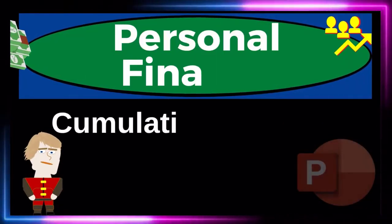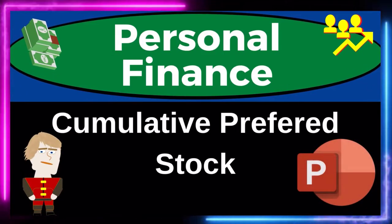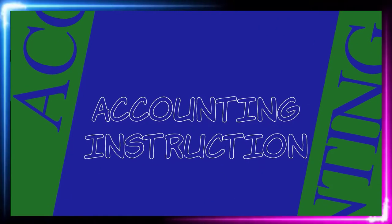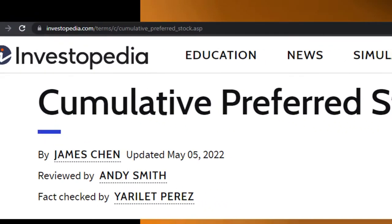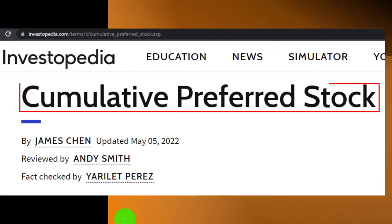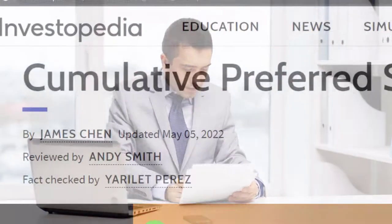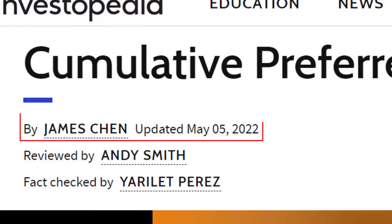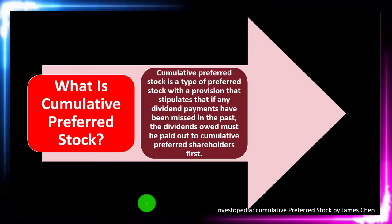Personal finance PowerPoint presentation: cumulative preferred stock. Prepare to get financially fit by practicing personal finance. Most of this information comes from Investopedia, which you can find online — take a look at the references and resources to continue your research. This is by James Chen, updated May 5th, 2022.